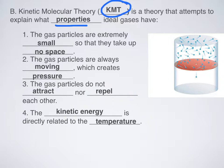So the first one is that gas particles are extremely small, so that they take up no space. Again, not something that is true, but something that we use in order to describe the properties of ideal gases.